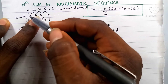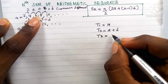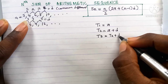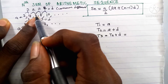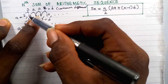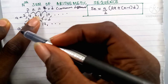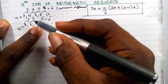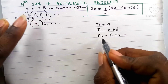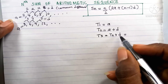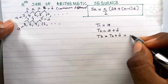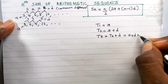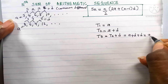To find the third term, t3 equals t2 plus d. To get 6 we added the second term 4 plus the common difference 2. Likewise we added the second term 6 with the common difference 3 to get 9. Since t2 is a plus d, we get t3 equals a plus d plus d, which is a plus 2d.